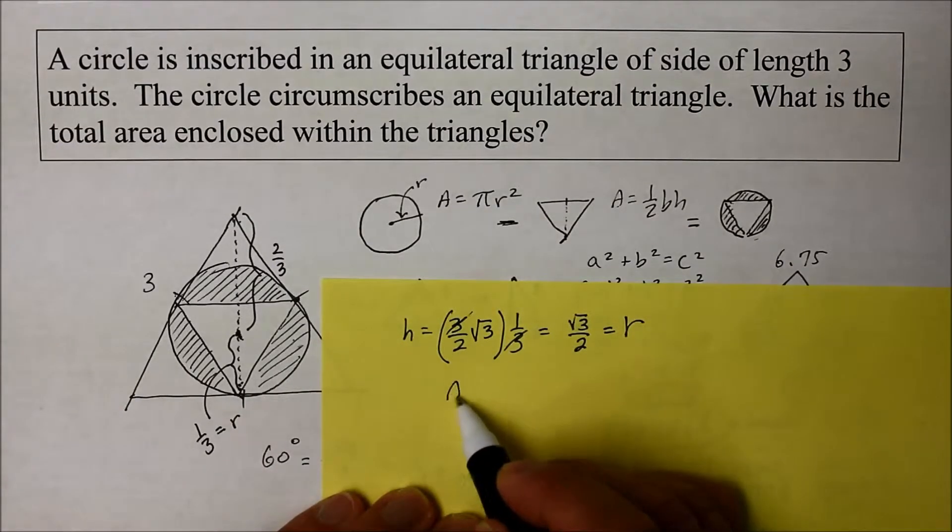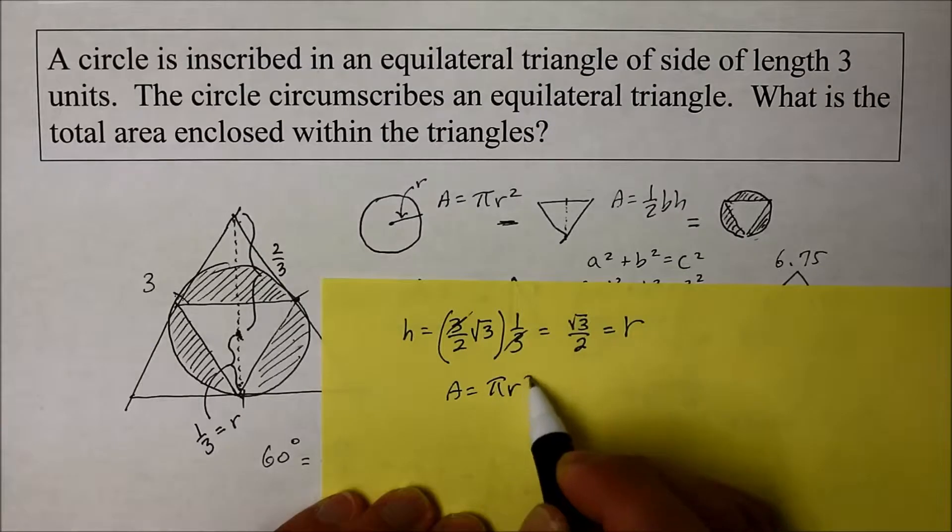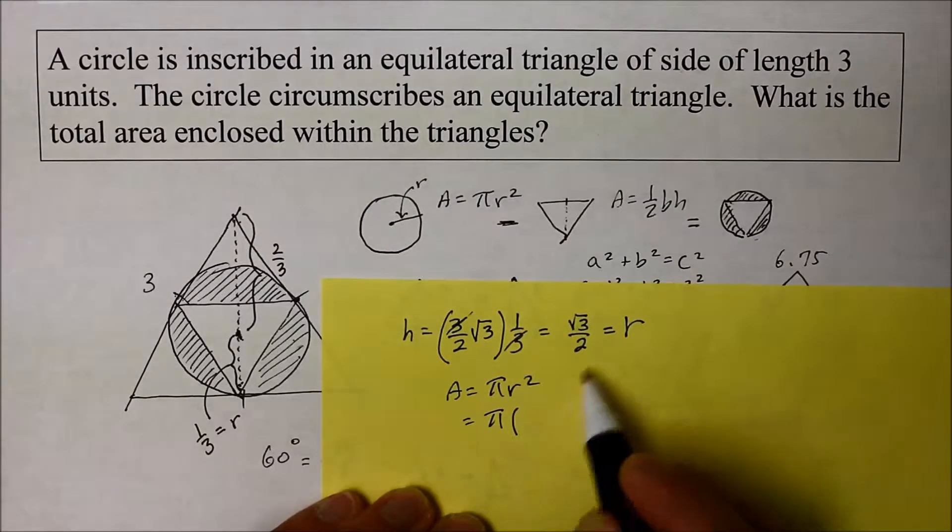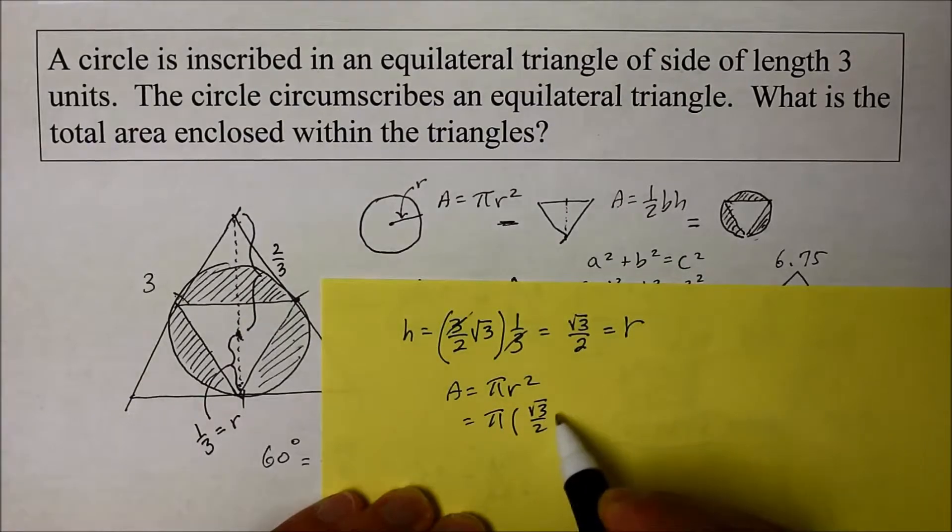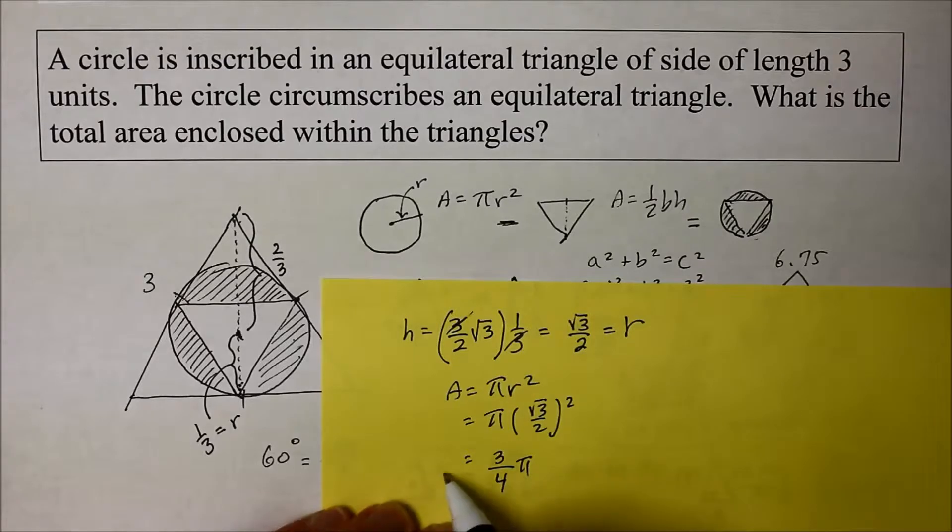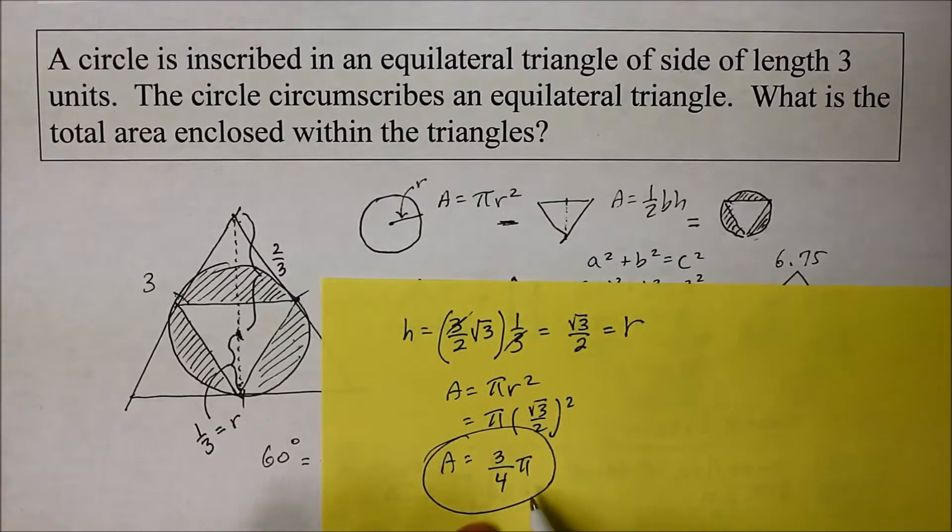Now with that radius, of course, I could find the area of a circle, pi r squared. So I get pi times the radius, which is square root of 3 over 2 squared. When you multiply two identical radicals, the radical comes out. And 2 squared is 4 times pi. So I'm going to leave my answer in radiant form like this, 3 over 4 pi.